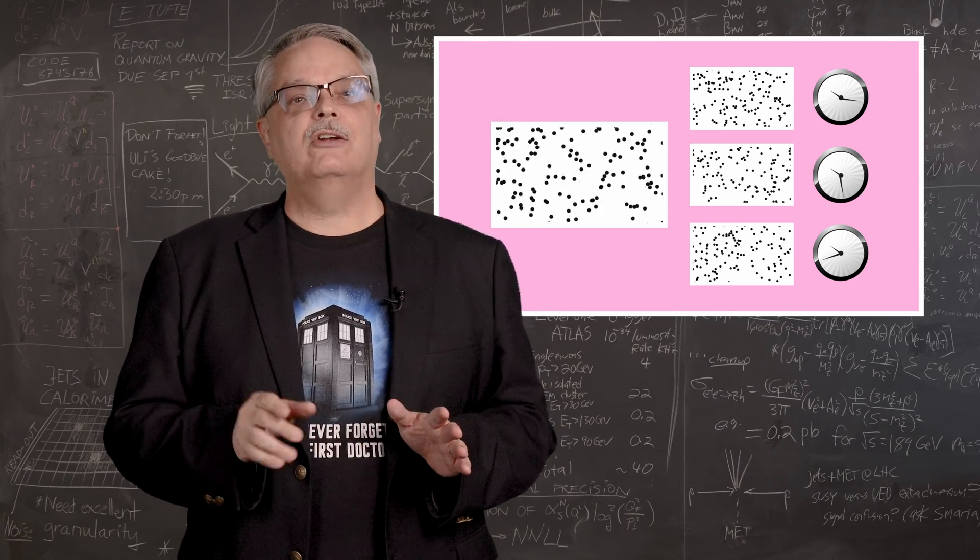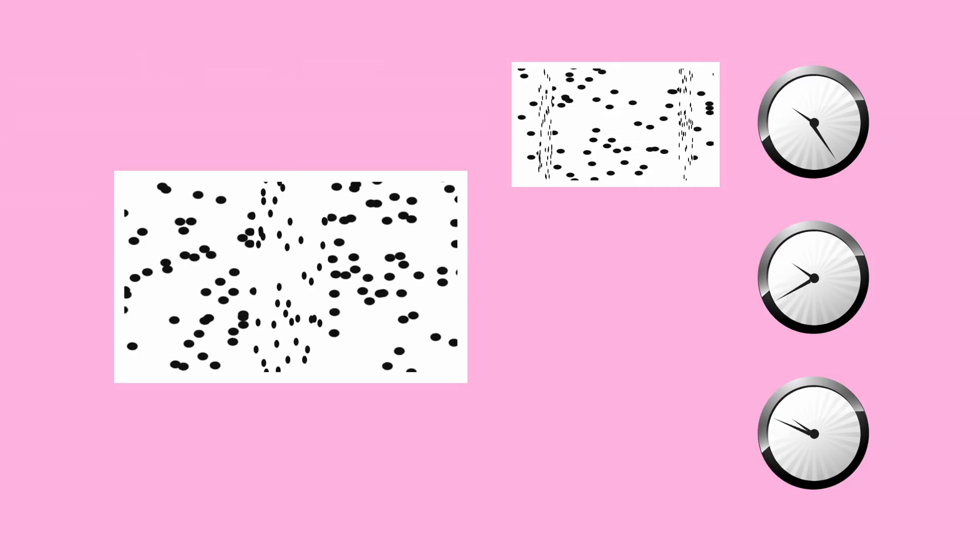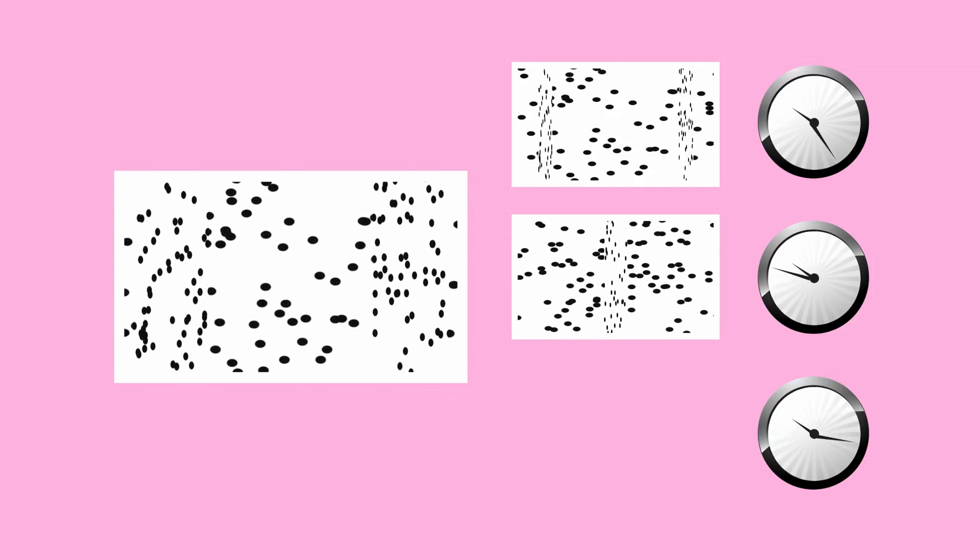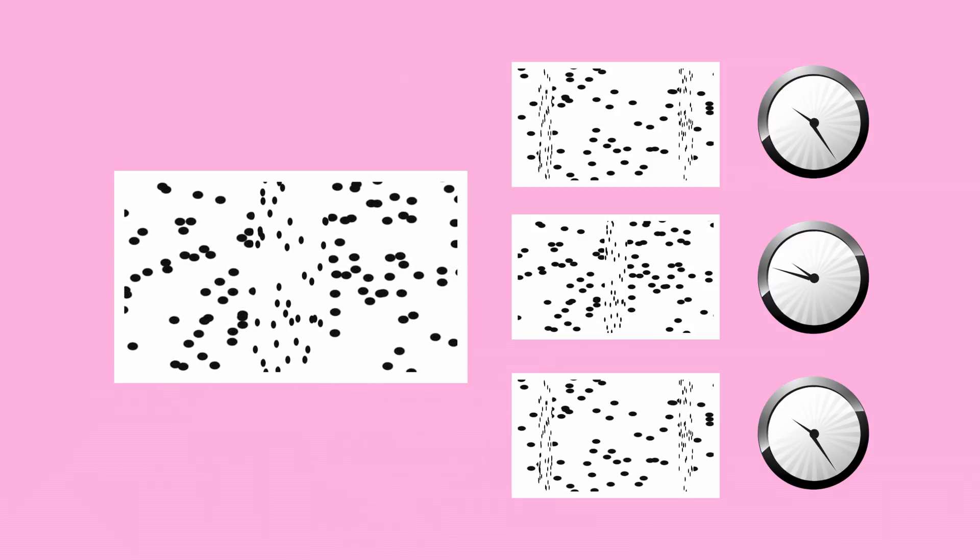Wilczek proposed a type of matter that changed what it looked like over time. Look at it one moment and you see one thing, look at it at a different time and it looks different. And here's the key point, if you look at it at a fixed time interval, it would always look the same.